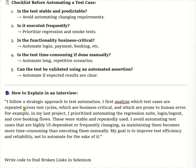How to explain this in the interview: say that you follow a strategic approach to test automation. First, analyze which test cases are repeated across test cycles, which are business-critical, and which are prone to human error. For example, in your last project, you can explain with practical knowledge about your specific experience.